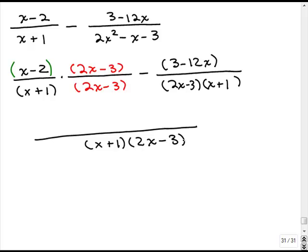All right, so we need to simplify the numerator of each, and we're going to subtract the second numerator. So, x minus 2 times 2x minus 3, doing the FOIL method, I'm going to have 2x squared, I'm going to have minus 3x, minus 4x for the inner term, and the last term will be plus 6. And I'm going to distribute my minus sign over here, so I'm going to have a minus 3 and a plus 12x.